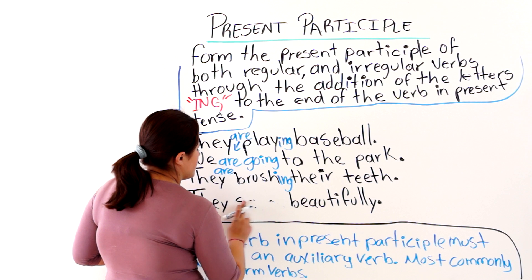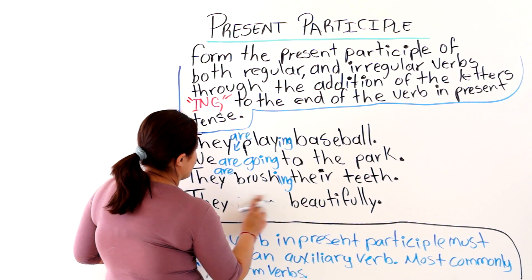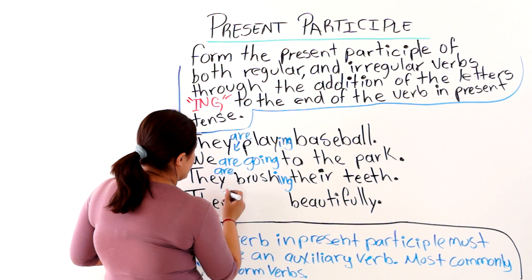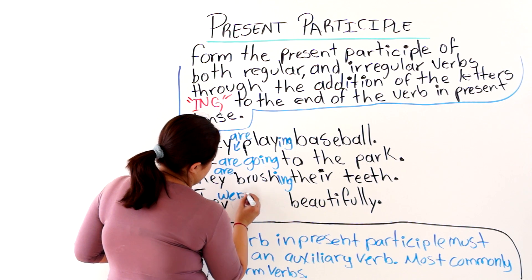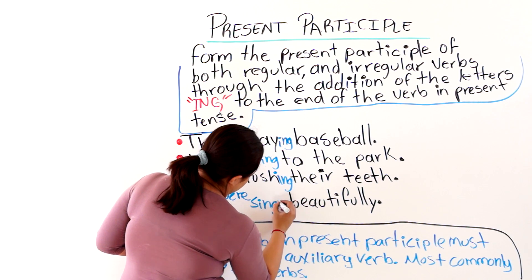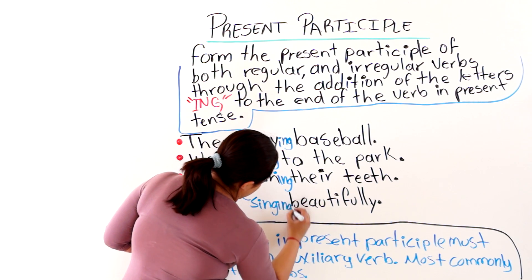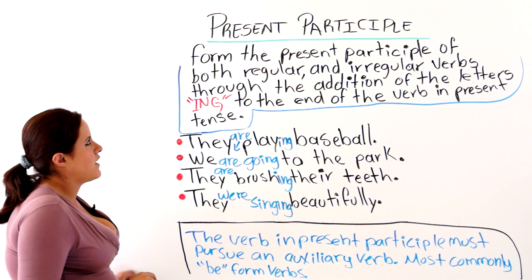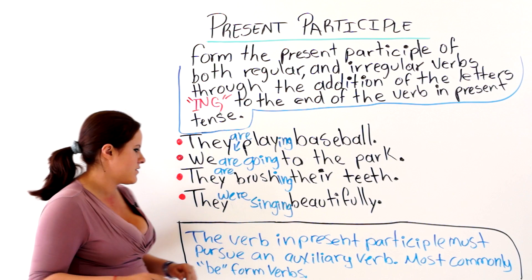So, we are just going to erase the whole thing. And we are going to say, you could also use the past tense of the verb be. They were singing beautifully. So, this is how you use the present participle.